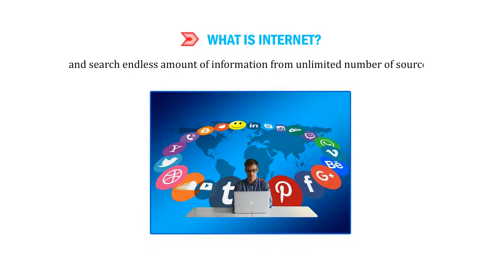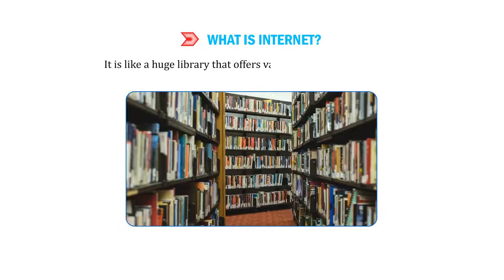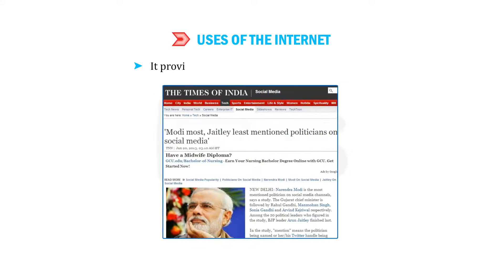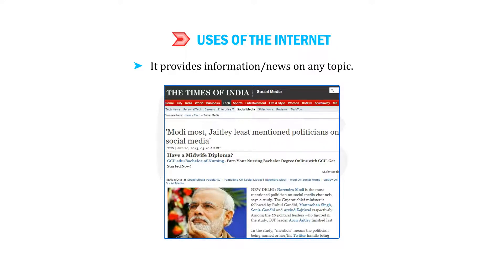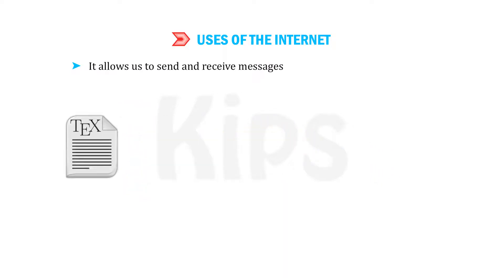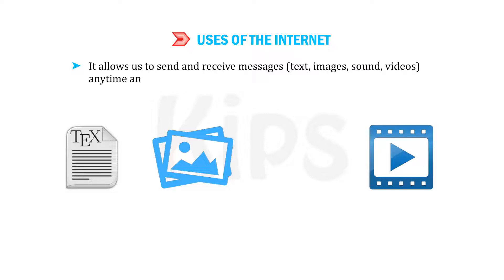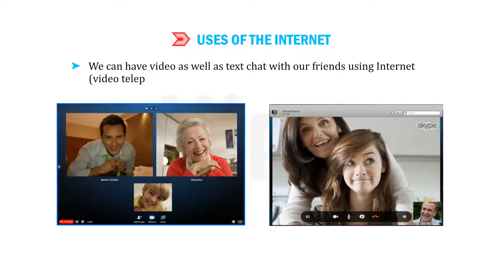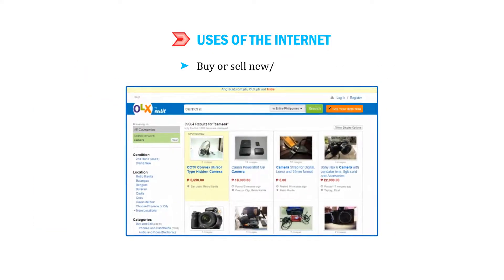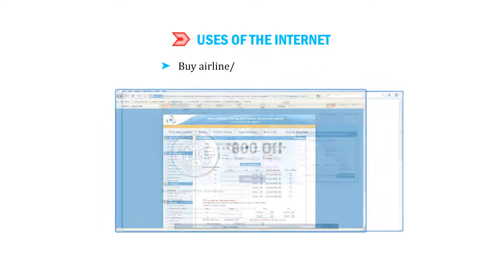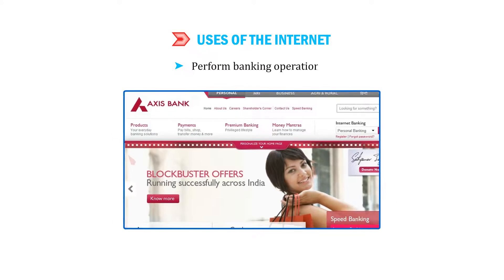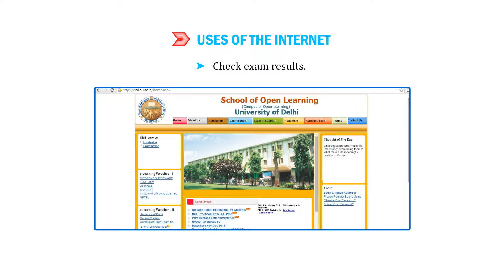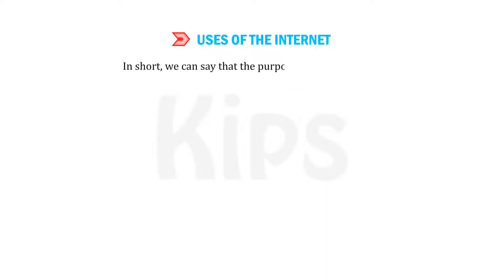The internet is like a huge library that offers various types of information. It provides information or news on any topic. It allows us to send and receive messages, text, images, sound, and videos anytime and anywhere. We can have video as well as text chat with our friends using the internet. We can also do video telephony, buy or sell goods, book airline and railway tickets, perform banking operations, and check exam results. In short, the purpose of the internet is to make our lives easier and better.